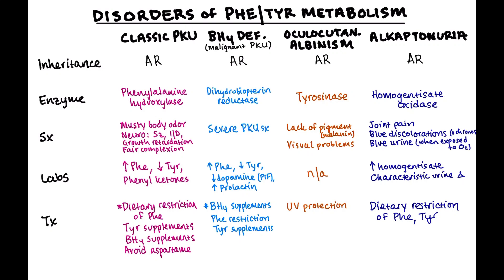Treatment for malignant PKU is much the same as classic PKU, except there is a greater emphasis on giving BH4 supplements. Oculocutaneous albinism type 1 is the tyrosinase deficiency, and it is the second most common cause of oculocutaneous albinism. Symptoms are clinically evident — very fair skin, white hair, visual problems. No specific labs are needed. Treatment is symptomatic UV protection, primarily because lack of melanin puts patients at risk for skin cancer.